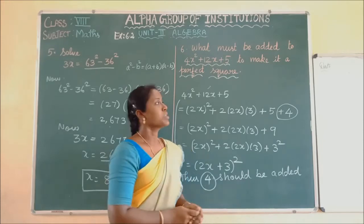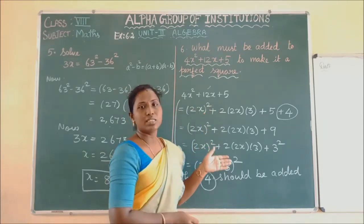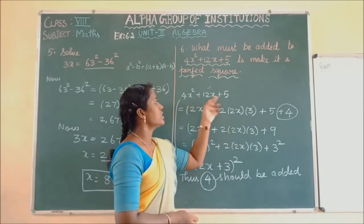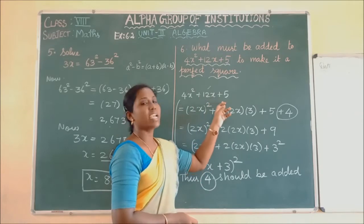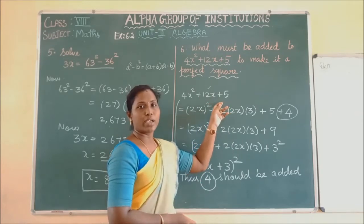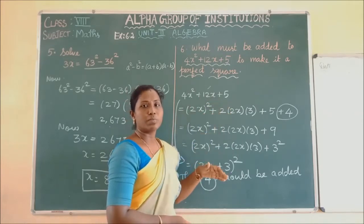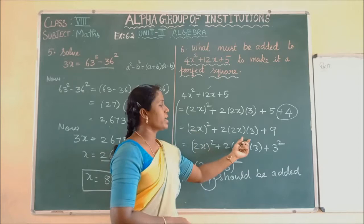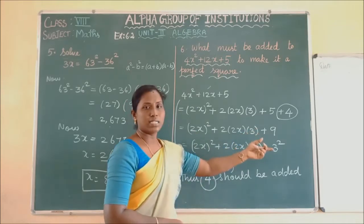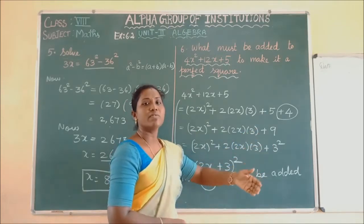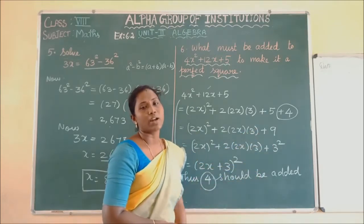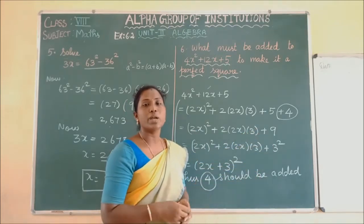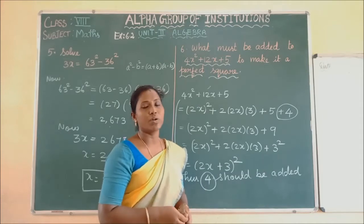So whenever a question like this is given, first check the sign, then expand in the form of the identity, identify the missing term, and add that missing term to the given expression so that we can make it a perfect square.